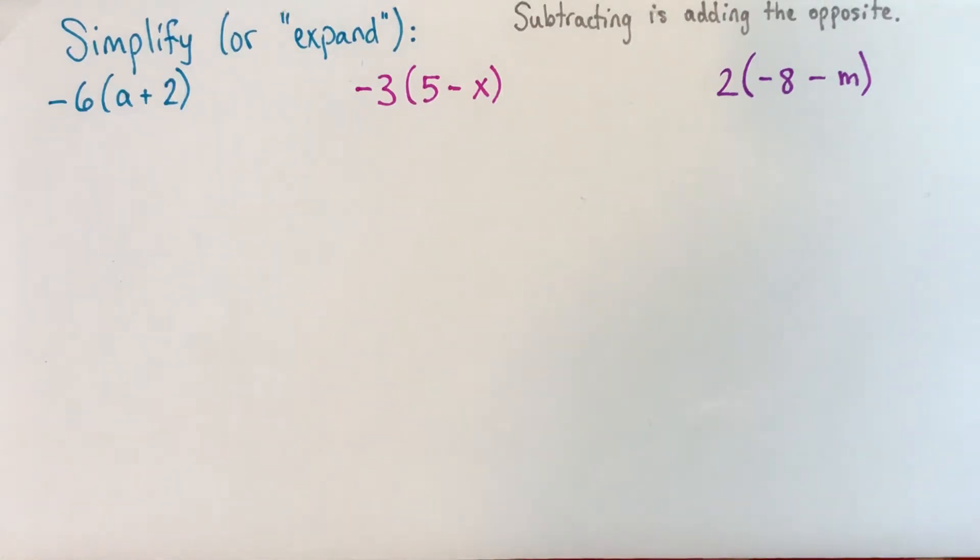Hi. In this video, I'm going to do a few examples of simplifying expressions with the distributive property. I've chosen examples that have a lot of negatives in them, because I find that a bunch of negatives or subtractions can be a thing that confuses students.